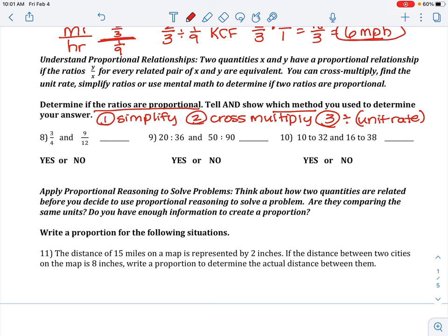Let's do cross-multiply. 4 times 9 is 36. 12 times 3 is 36. The cross-products of these are equivalent. So, yes, it is proportional. And we used cross-multiply for our method there.